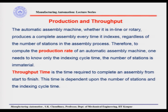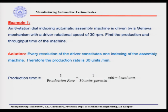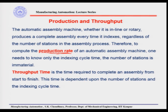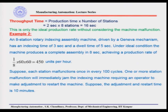The throughput time is the time taken for making a complete assembly. Therefore, the throughput time will be equal to the production time multiplied by the number of stations. The number of stations is immaterial when considering the production rate, whereas in considering the throughput time we have to multiply the production rate by the number of stations.